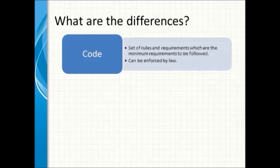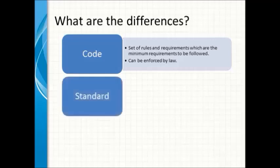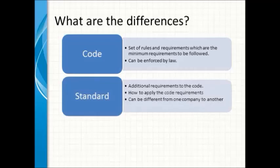The code is a set of rules and requirements, and these requirements are the minimum requirements for building a facility. These requirements have to be followed by everyone — by the engineer, by the operations, by the manufacturers, by anyone who is working on this project. The code is sometimes legal and mandated by the authorities.